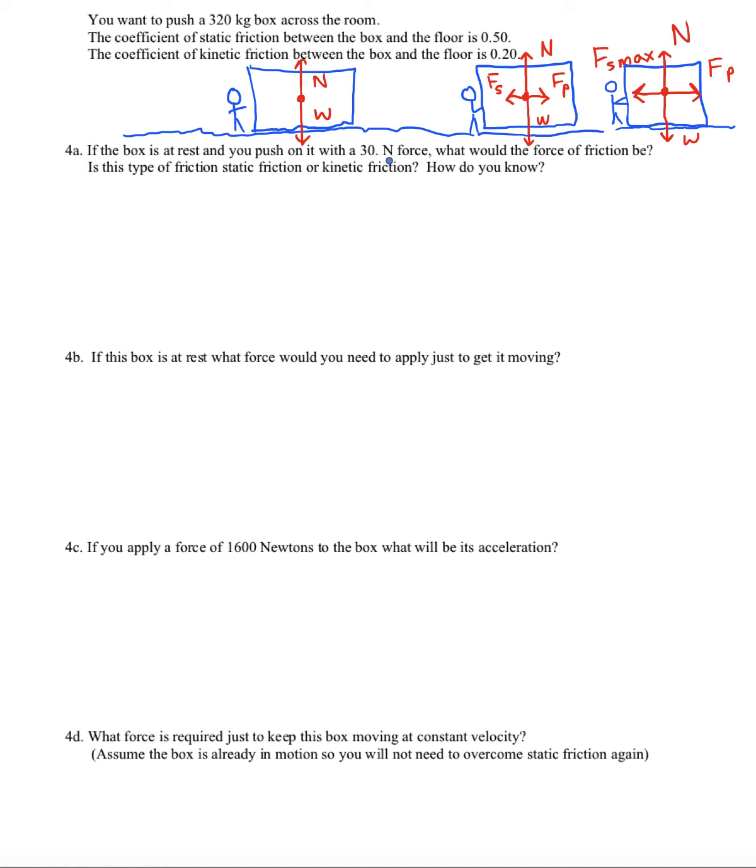If the box is at rest and you push on it with 30 newtons of force, what would the force of friction be? First thing we want to figure out is how large can that static friction get? This is the calculation Fs max. And we use mu s times the normal force. All right, so let's take that 0.5 coefficient of static friction, and we'll multiply by the normal force here, which would be the mass of the object times g. All right, it looks like the max static friction is 1570 newtons. That's pretty big.